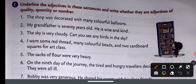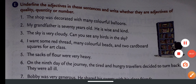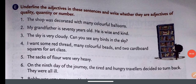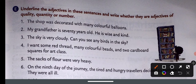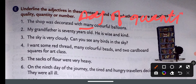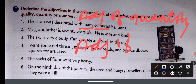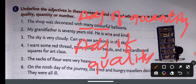Underline the adjectives in the sentences and identify whether they are adjectives of quality, quantity, or number. For example: 'The shop was decorated with many colorful balloons.' Here, 'many' is an adjective of quantity — it tells how many balloons there are. 'Colorful' is an adjective of quality — it describes what kind of balloons they are.